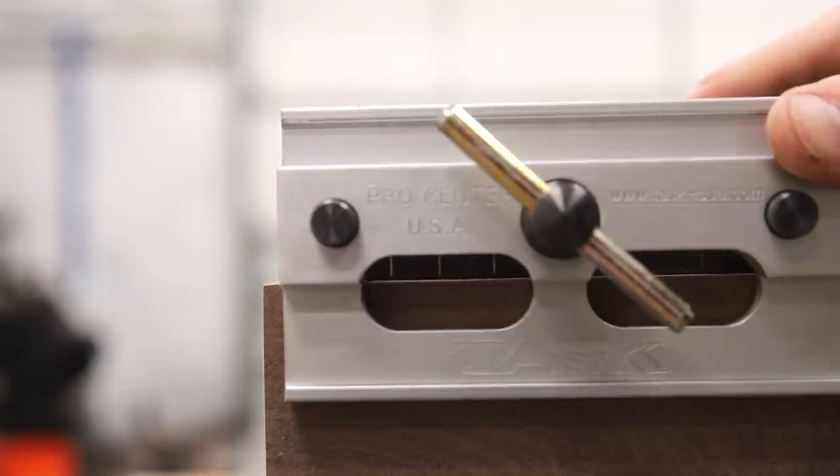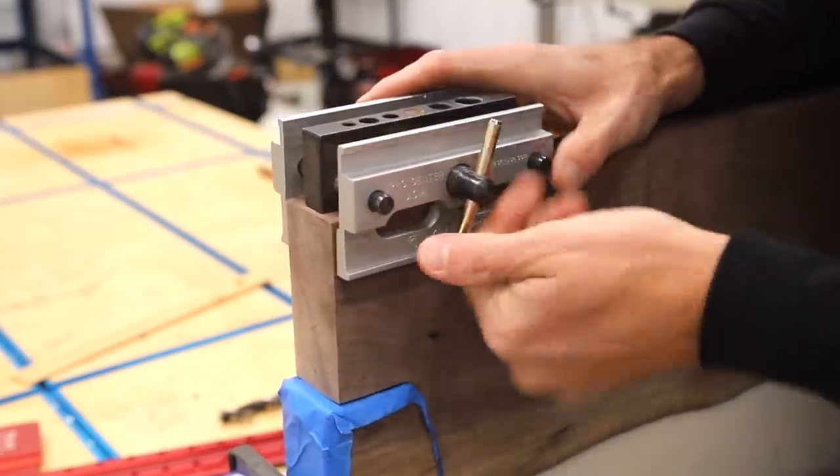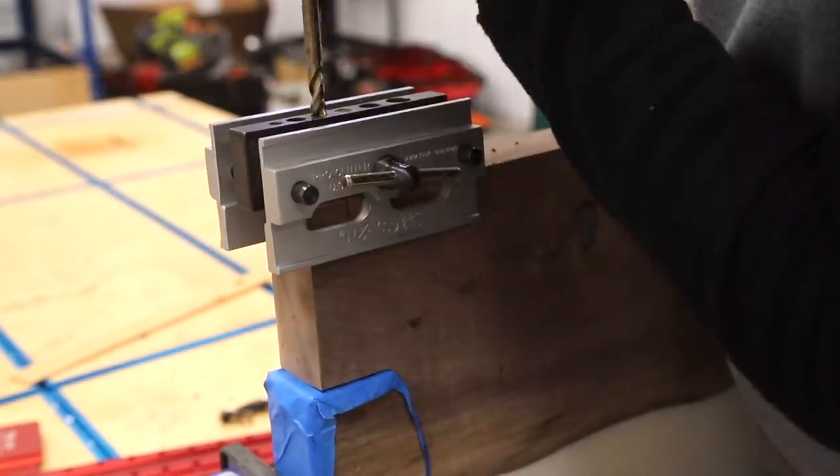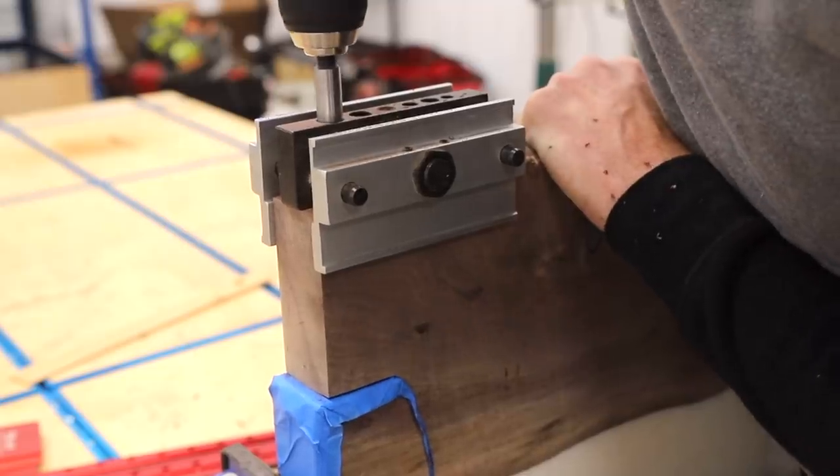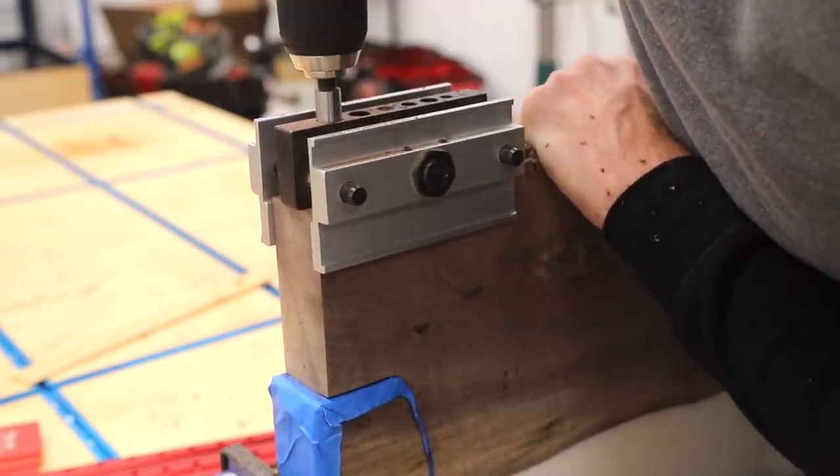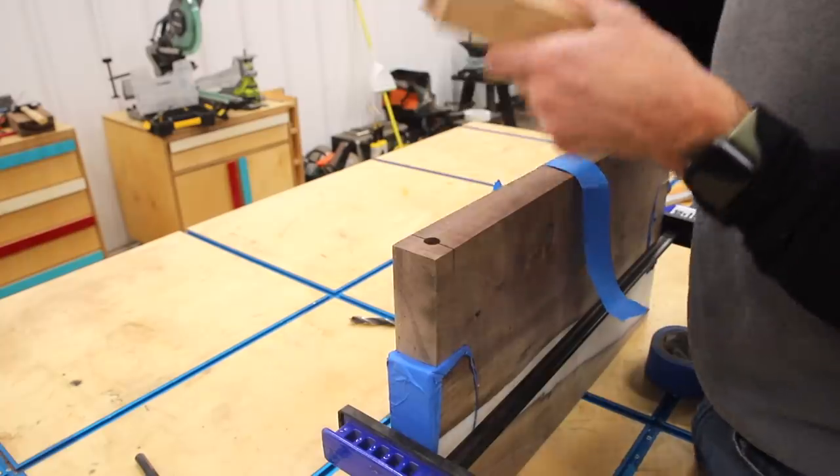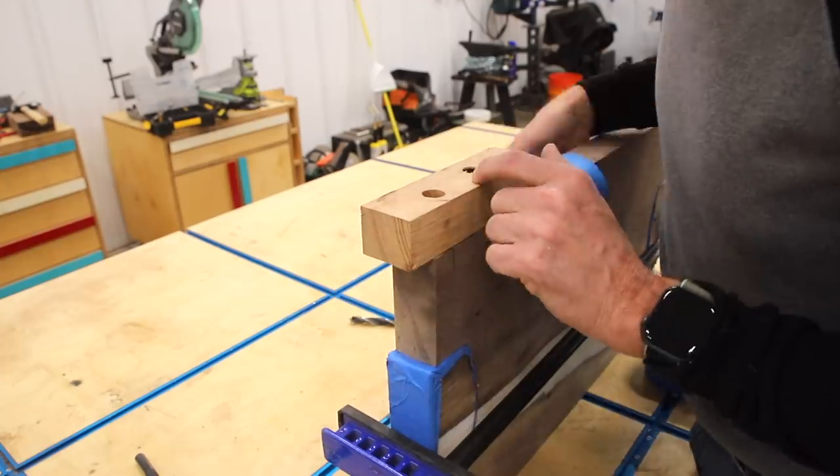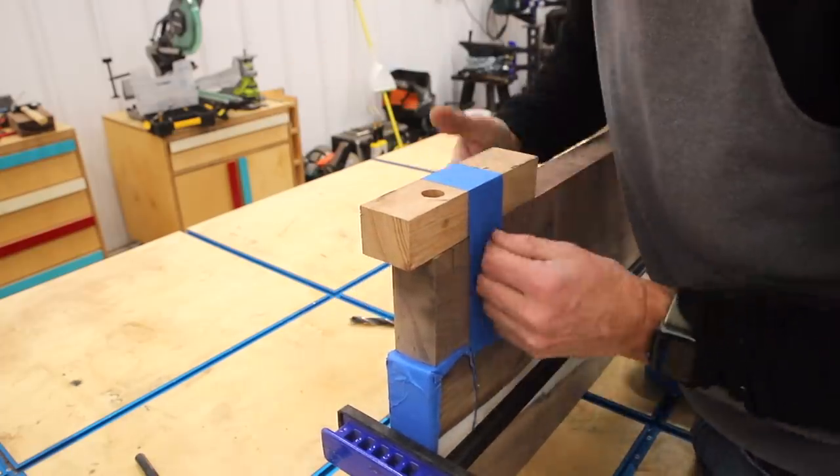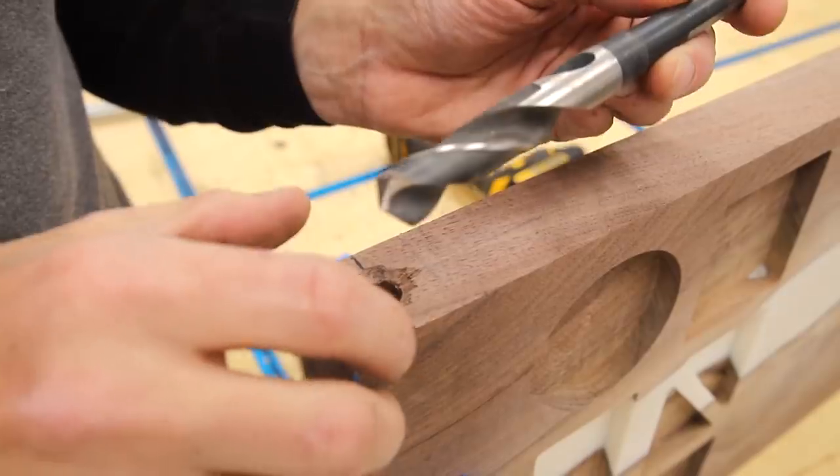I'm using my self-centering dowel jig to get these holes started and this one lets me start by drilling a quarter inch hole and then working my way all the way up to drilling out a half inch hole. After that I still needed to drill out the holes to match the five-eighths inch outside diameter of the copper pipe I'm using for the handles.